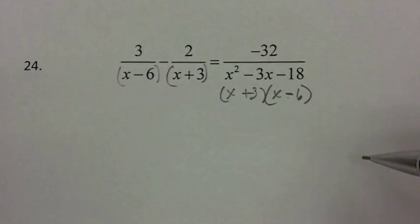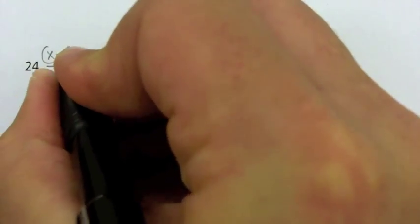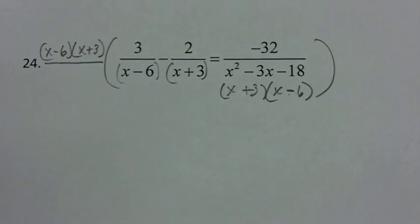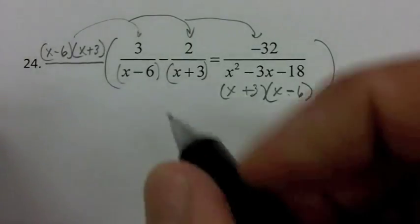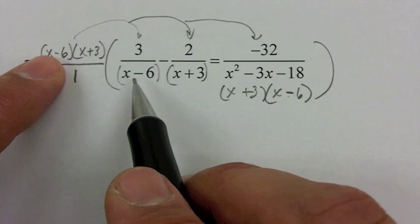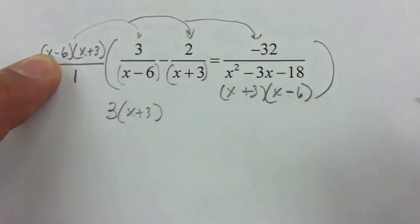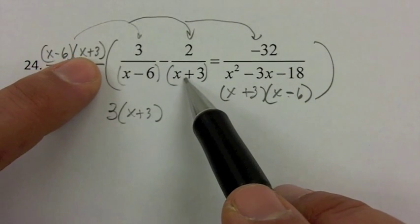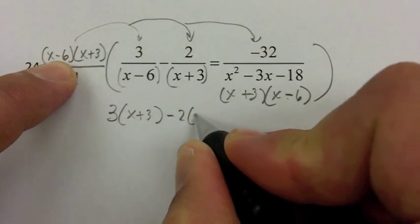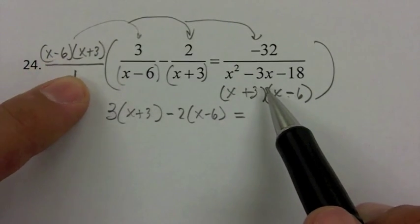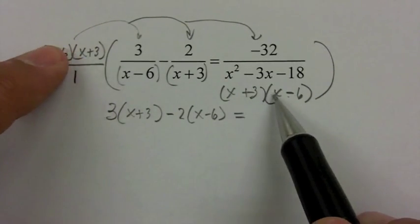I'm going to multiply everything in the equation by x minus 6 times x plus 3. For the first term, the x minus 6 divides out, leaving 3 times x plus 3. For the second term, the x plus 3 divides out, leaving minus 2 times x minus 6. On the right side, when I multiply by the LCD, both the x minus 6 and x plus 3 divide out entirely, leaving just negative 32.